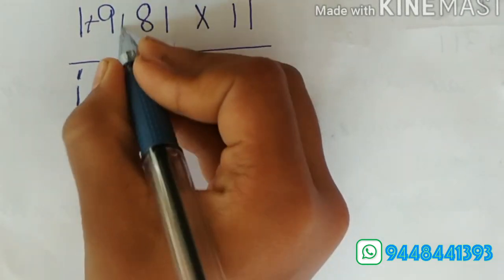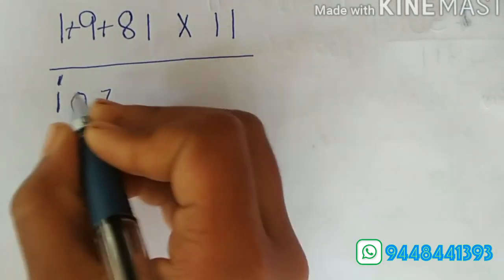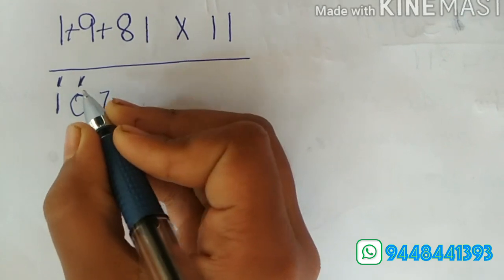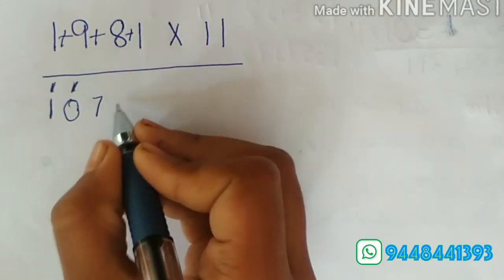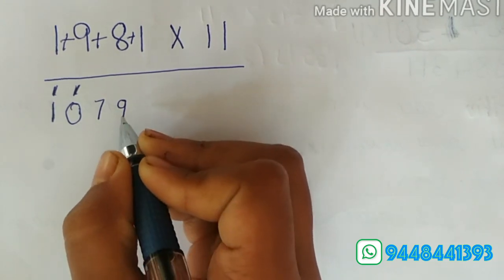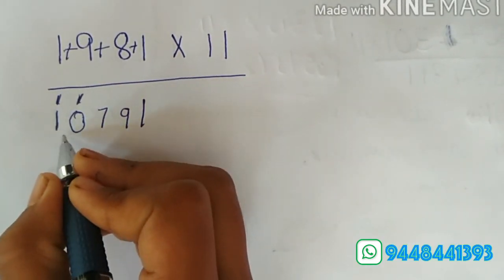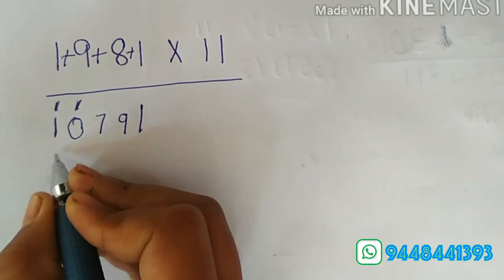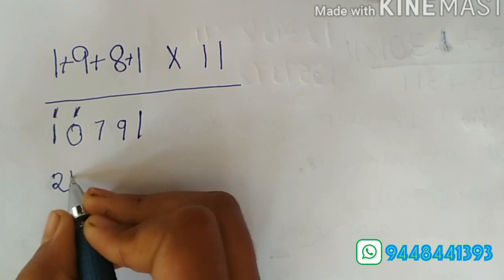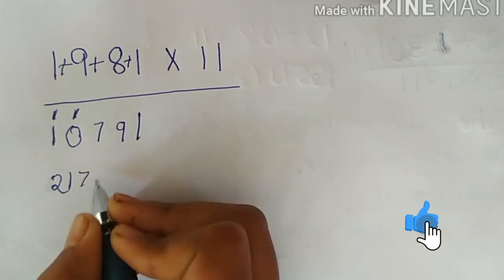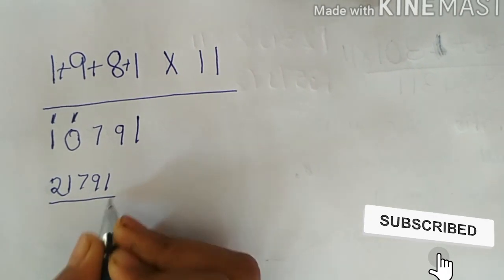Next, add 8 plus 1, that is 9. And write the last digit 1 as always. Later, the carried number must be added. Here, 1 plus 1 is 2. 1 plus 0 is 1. And the rest remain the same. And the answer is 21791.